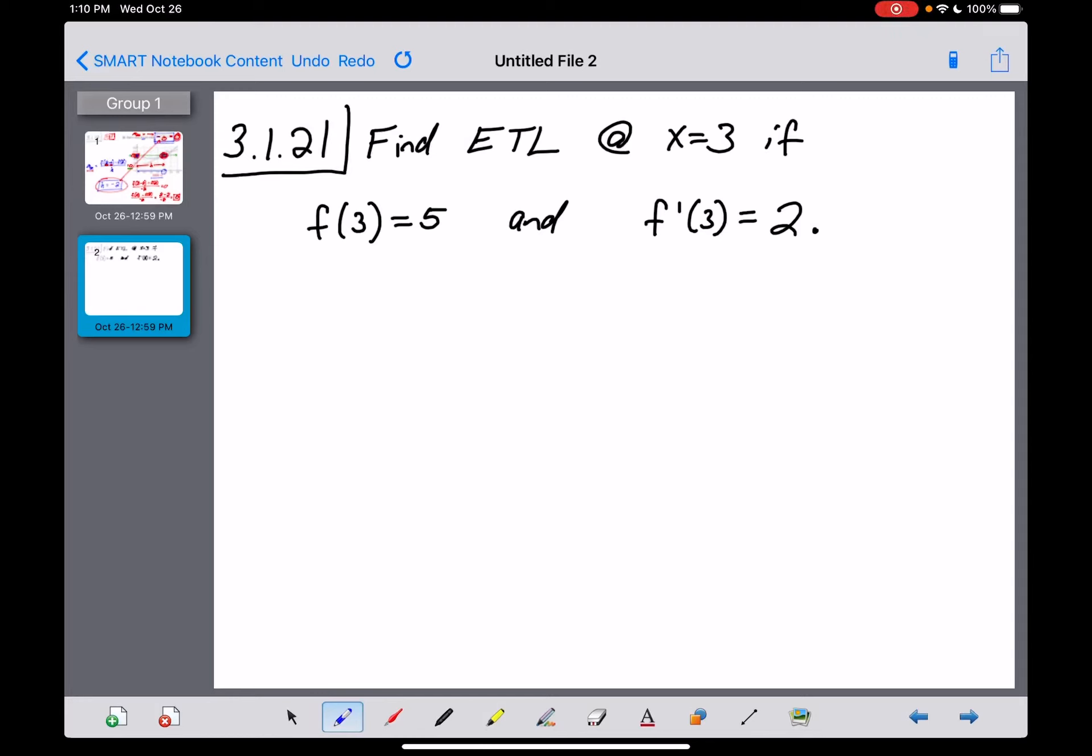Okay, problem 3.1.21 is asking us to come up with the equation of the tangent line at the spot where x is equal to 3 if they've given you these two pieces of information: f of 3 is equal to 5 and f prime of 3 is equal to 2.